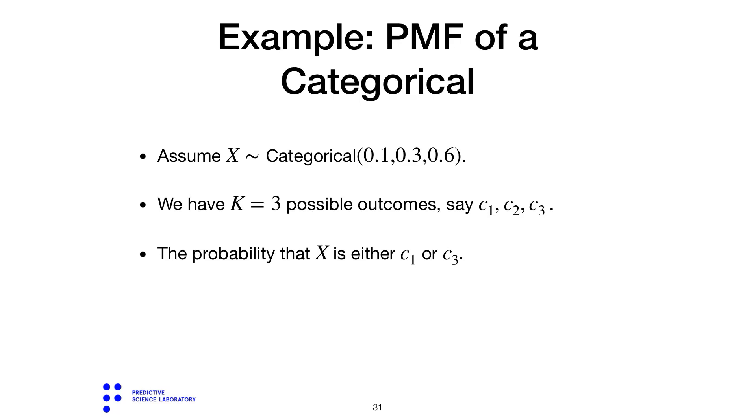Now that we have the probability mass function, we can calculate arbitrarily complex probabilities. For example, let's find the probability that X is either c1 or c3. You can write the probability that X is c1 or X is c3. An alternative way to write this is as the probability that X belongs to the set {c1, c3}. These expressions are mathematically identical.